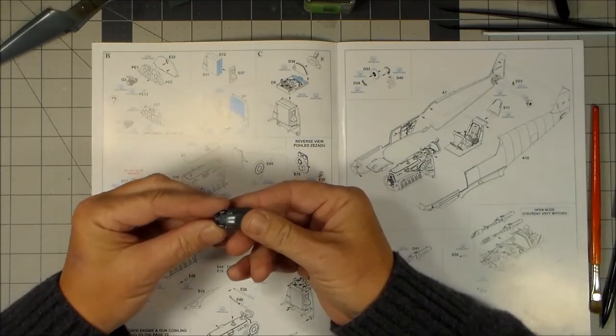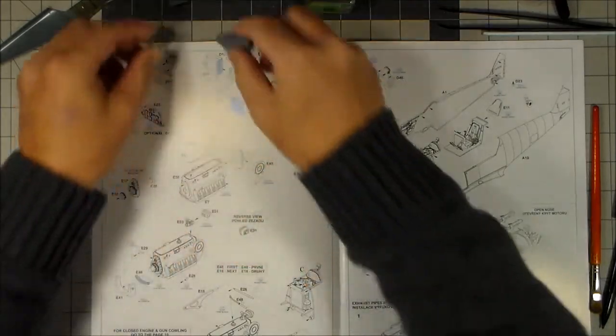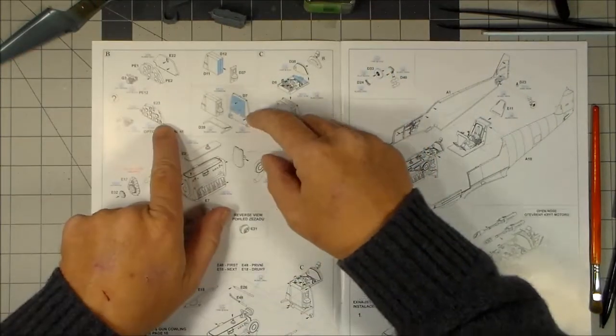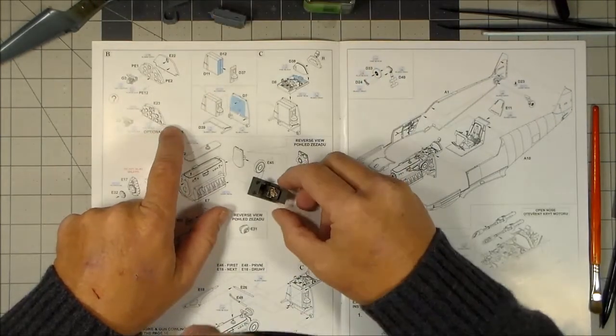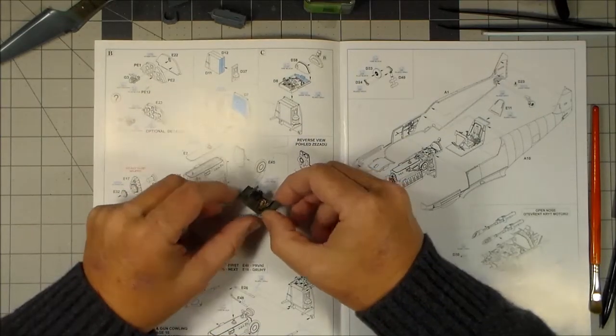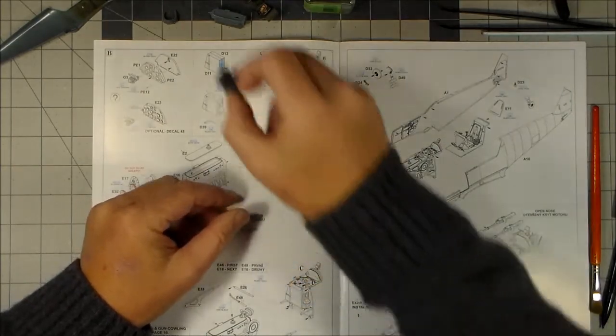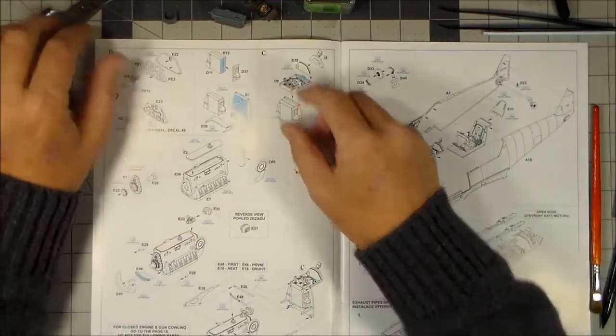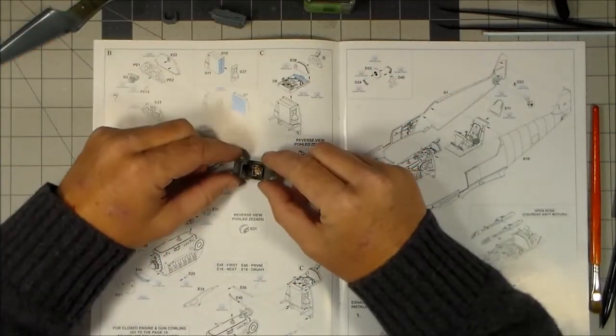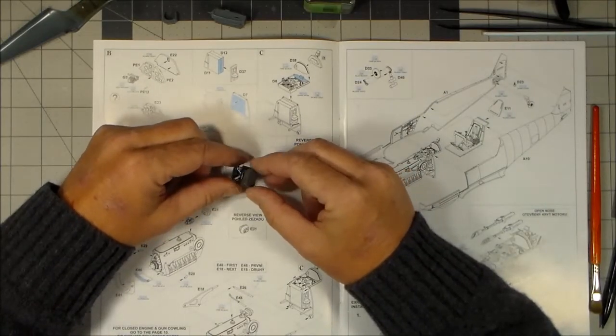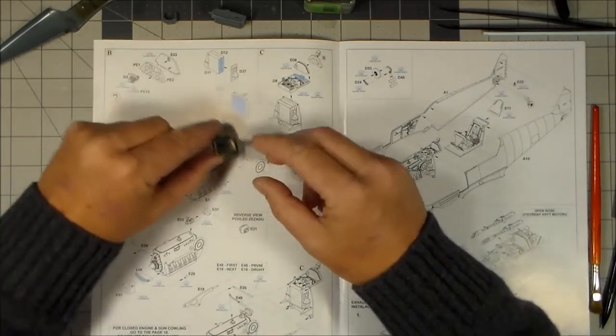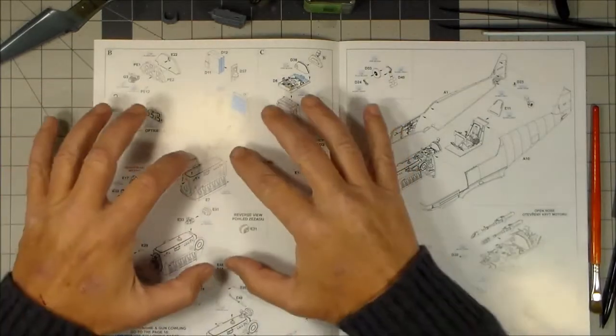So everything will fit for the cowling and so forth whenever you put it together. The instrument panel I got that assembled and the gun sight and installed on this part here. The cockpit I did just a little bit of weathering on it, not much.